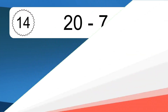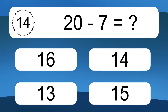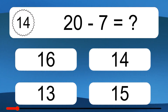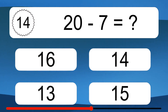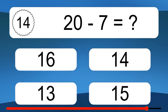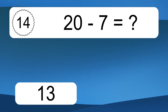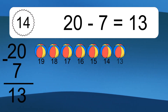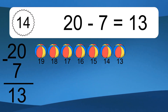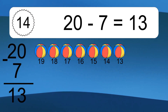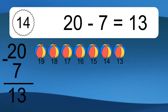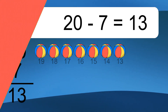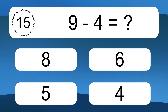20 minus 7 equals what? 20 minus 7 equals 13. Let's count it: 19, 18, 17, 16, 15, 14, 13.